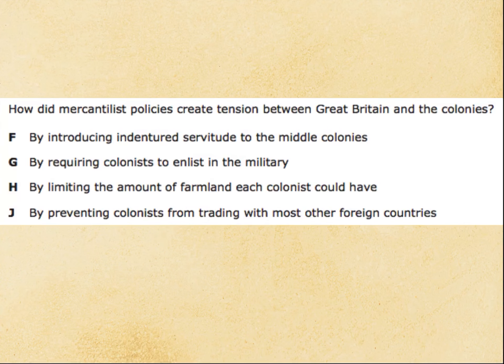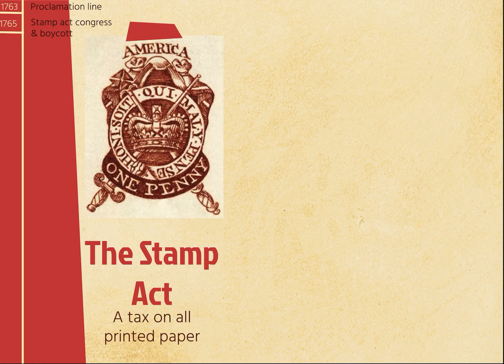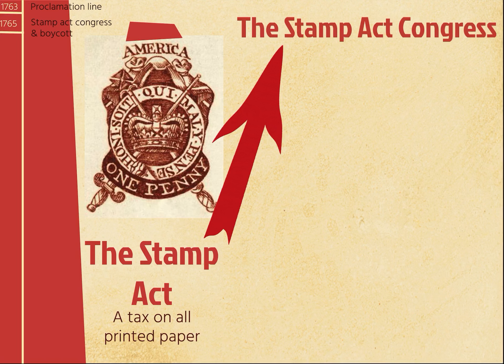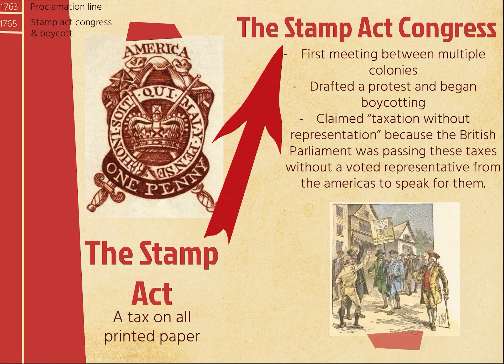There's a star question. The Stamp Act is going to be the first tax, and it's a tax on printed paper. What they would have to do is literally stamp the paper, and if that paper was stamped, it was a legal piece of paper according to the British government, and they had to pay for that stamp. This Stamp Act caused the Americans to create the Stamp Act Congress — it's the first meeting between multiple colonies. They drafted a protest and decided to begin boycotting, which is where you decide not to purchase anything related to whatever they're protesting. In the Stamp Act Congress, they claimed taxation without representation, which becomes the outcry of the revolution, because the British Parliament was passing these taxes without a representative from the colonies. So no one was speaking up for their rights.